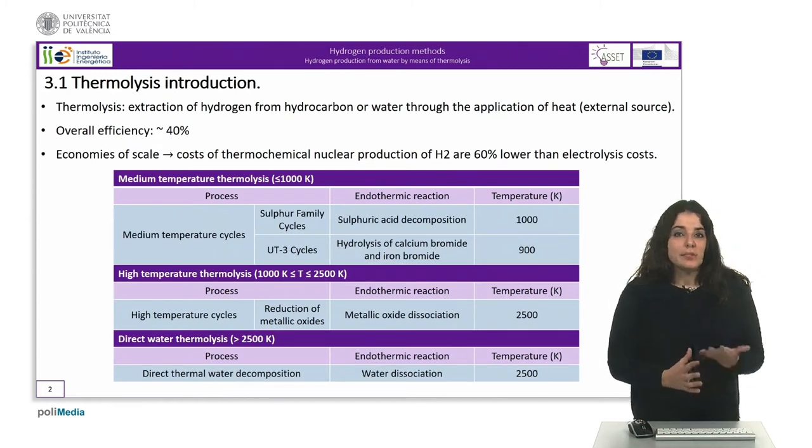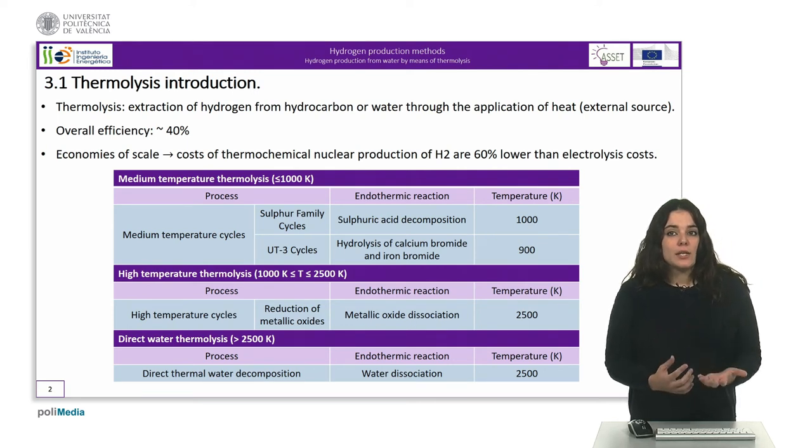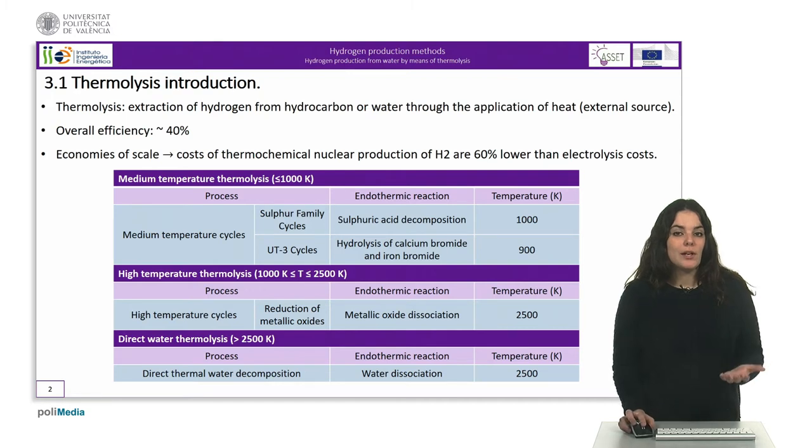Thermolysis processes involve the extraction of hydrogen from the molecule that contains it, that is to say a hydrocarbon or the water molecule, through the application of heat. The heat comes from an external source such as concentrated solar energy or high temperature nuclear energy.